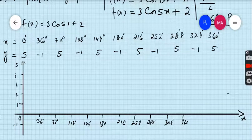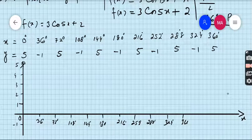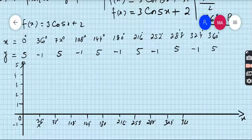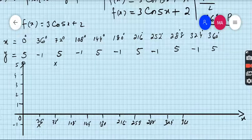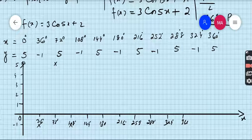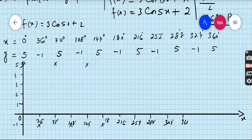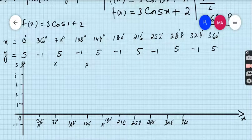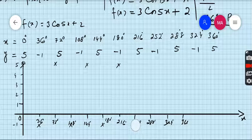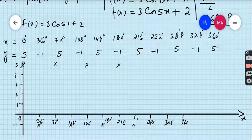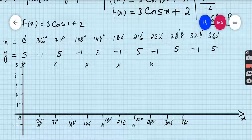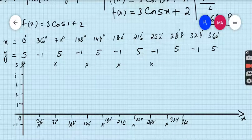So when x is 0, the y is 5. When x is 36, the y is negative 1. When 72, then 5. When 108, then negative 1. When 144, then 5. When 180, then negative 1. When 216, then 5. When 252, then negative 1. When 288, then 5. When 324, then negative 1. And when 360, the value is 5.